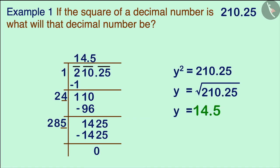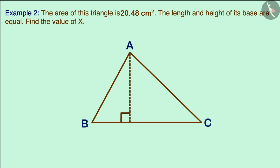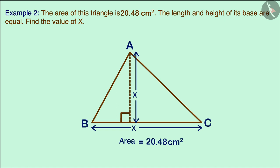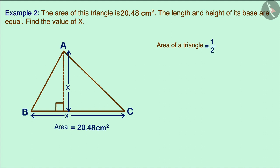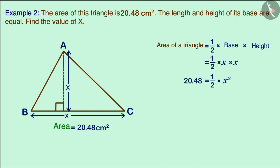Therefore y equals 14.5, meaning that number is 14.5. Now look at this triangle: its area is 20.48 square centimeters, and the length of its base and its height are both equal to x. Find the value of x. The formula for the area of a triangle is half times base times height. Since both base and height are x, the area equals half times x squared.